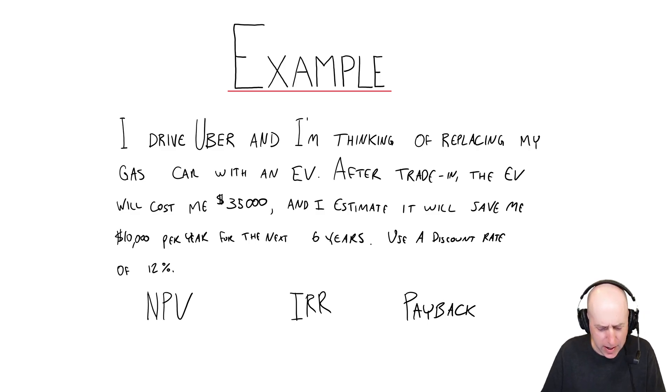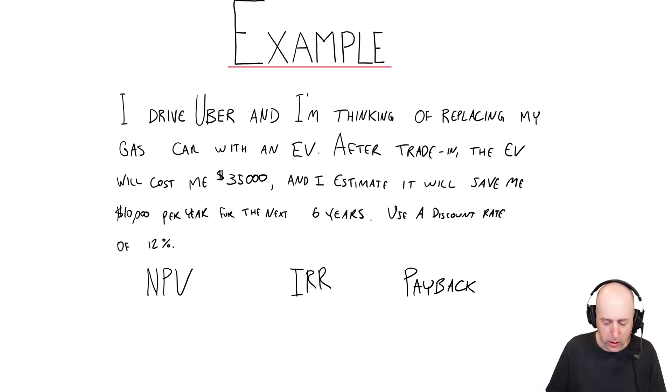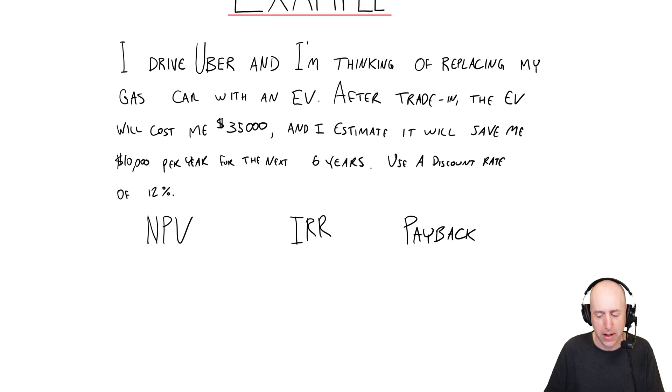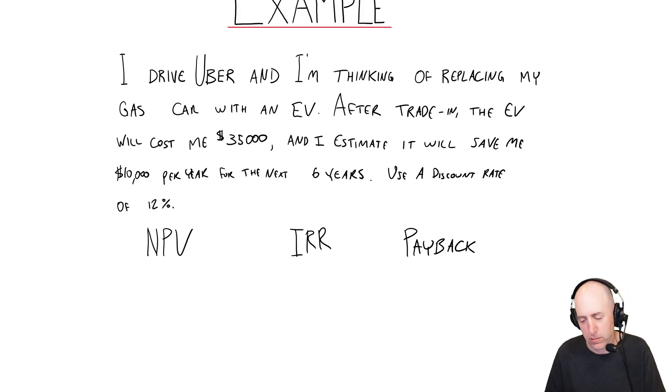So I spend $35,000 upgrading my car, getting a new EV, and it's going to save me $10,000 a year for the next six years, and the discount rate here is a big one, 12%. So we'll start by calculating the net present value. We'll go over what it means. We'll talk about IRR and last payback.